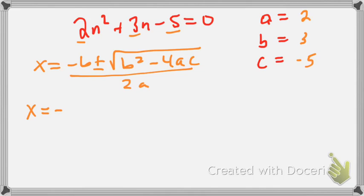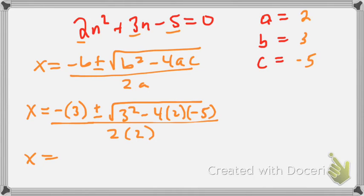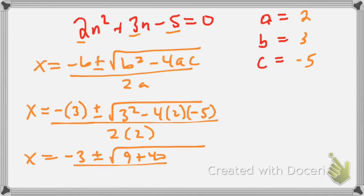Now we're just plugging in. B is 3, so negative 3, plus or minus the square root of 3 squared minus 4 times 2 times negative 5, all over 2 times 2. So negative times 3 is negative 3, plus or minus the square root — we have 3 squared is 9, and then negative 8 times negative 5, which is positive 40 — all over 4.